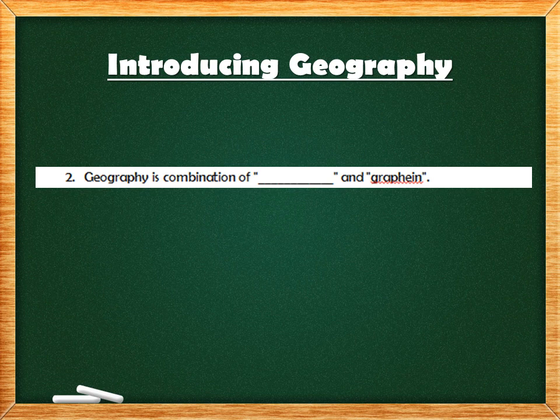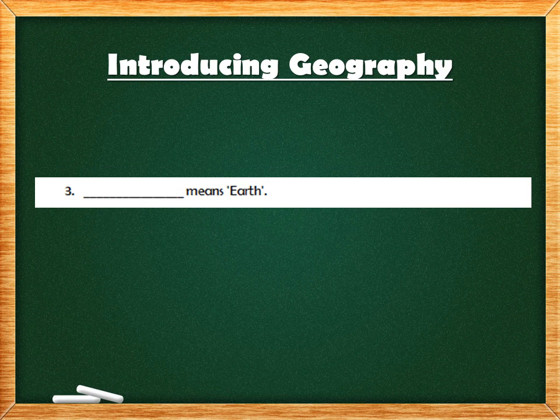The second question is: Geography is the combination of blank and graphene. The answer is GEO — G-E-O. The second question answer is GEO.